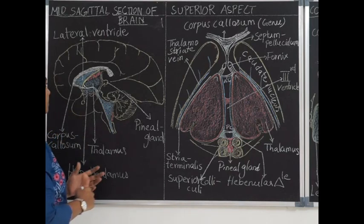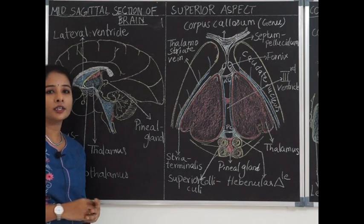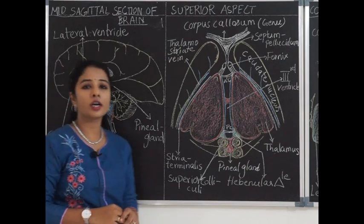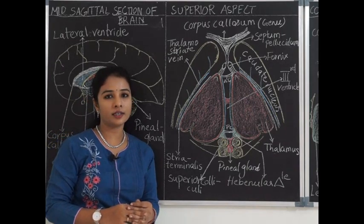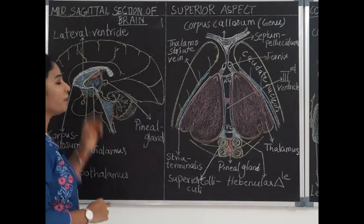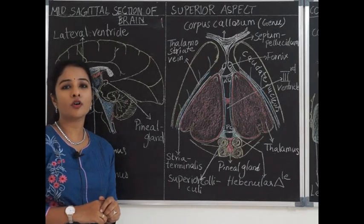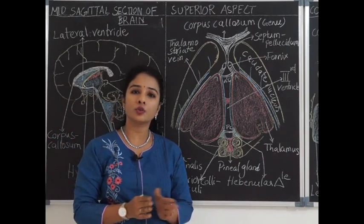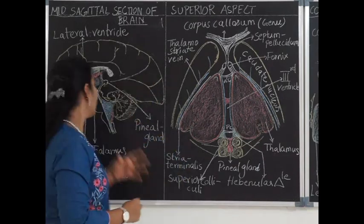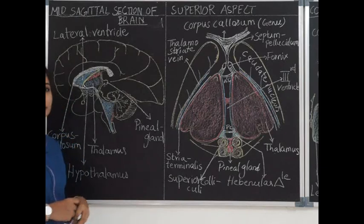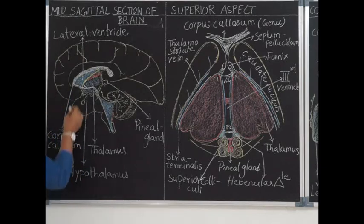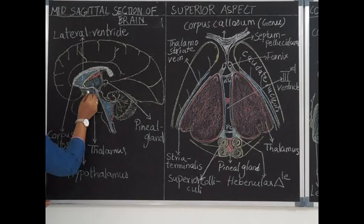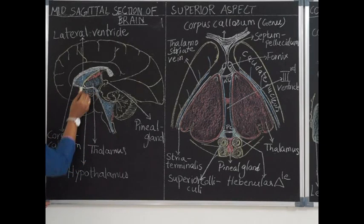The diencephalon is basically divided into two major parts called pars dorsalis and pars ventralis. The cavity present within the diencephalon is called the third ventricle, which is a thin slit-like gap separating the two thalami. These two parts are separated by means of an S-shaped sulcus called the hypothalamic sulcus.